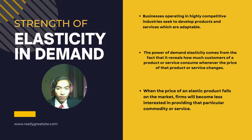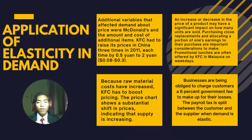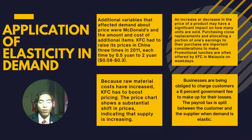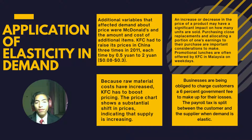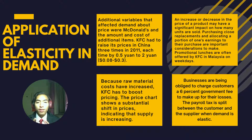As an application of elasticity in demand, KFC faced additional variables affecting demand beyond price, including competition from McDonald's and the cost of additional items. KFC had to raise its prices in China three times in 2011, each time by 0.5 yuan to 2 yuan, because raw material costs had increased. The price chart shows a substantial shift in prices, indicating that supply is increasing.